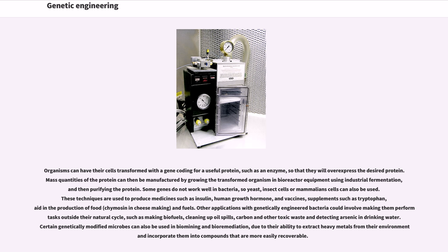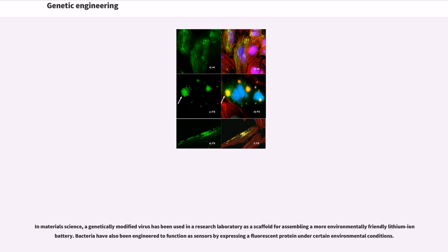Mass quantities of the protein can then be manufactured by growing the transformed organism in bioreactor equipment using industrial fermentation, and then purifying the protein. Some genes do not work well in bacteria, so yeast, insect cells, or mammalian cells can also be used. These techniques are used to produce medicines such as insulin, human growth hormone, and vaccines, supplements such as tryptophan, aid in the production of food such as chymosin in cheese making, and fuels. Other applications with genetically engineered bacteria could involve making them perform tasks outside their natural cycle, such as making biofuels, cleaning up oil spills, and detecting arsenic in drinking water. Certain genetically modified microbes can also be used in biomining and bioremediation, due to their ability to extract heavy metals from their environment. In materials science, a genetically modified virus has been used as a scaffold for assembling a more environmentally friendly lithium-ion battery. Bacteria have also been engineered to function as sensors by expressing a fluorescent protein under certain environmental conditions.